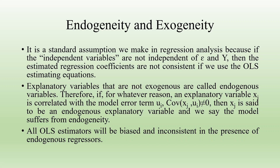Explanatory variables that are not exogenous are called endogenous variables. If for whatever reason an explanatory variable xj is correlated with the model error term — that is, the covariance of xj and the error term is not equal to zero — then xj is said to be an endogenous explanatory variable, and we say that the model suffers from endogeneity. All OLS estimators will be biased and inconsistent in the presence of endogenous regressors.